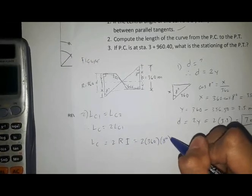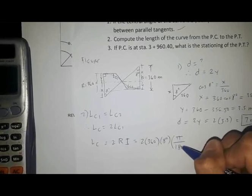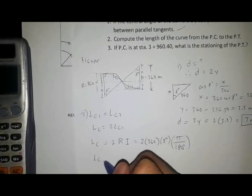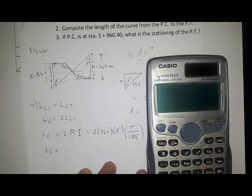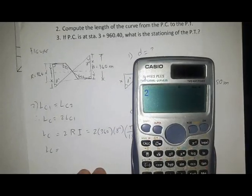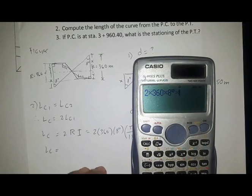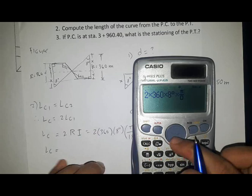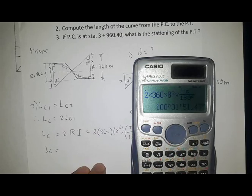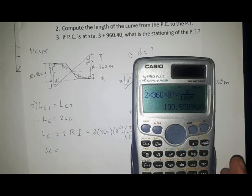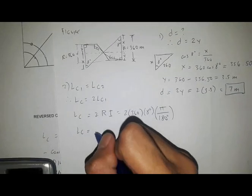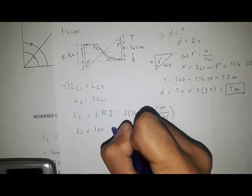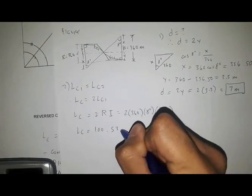We have LC equals 2 times the radius times I (in radians) equals 2 × 360 × 8° × (π/180°), which gives LC equals 100.53 meters.